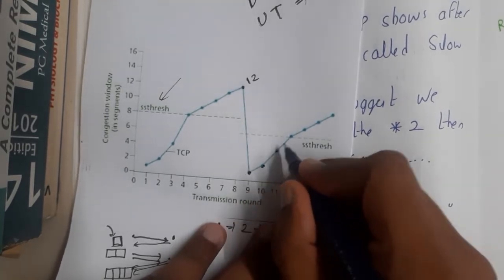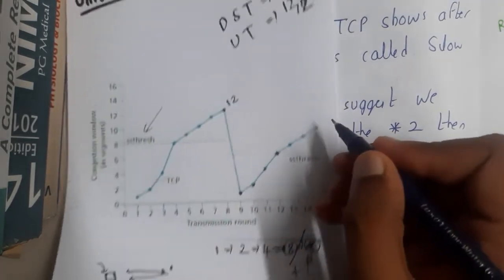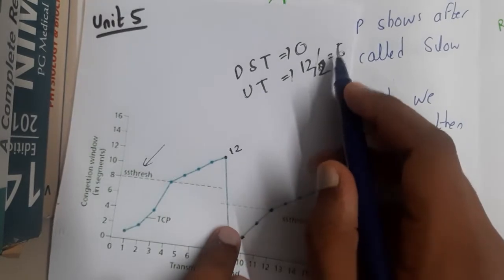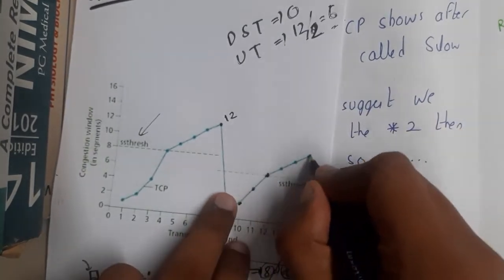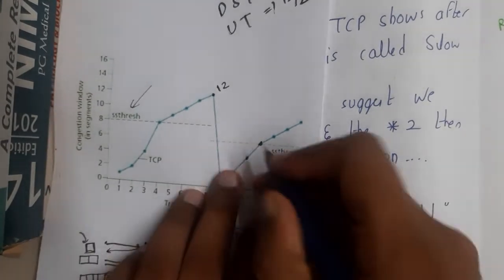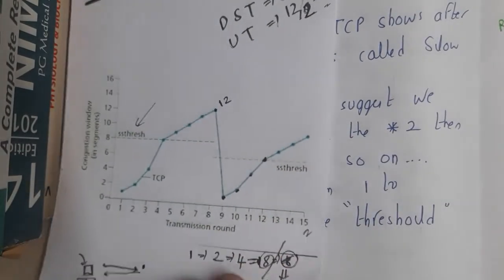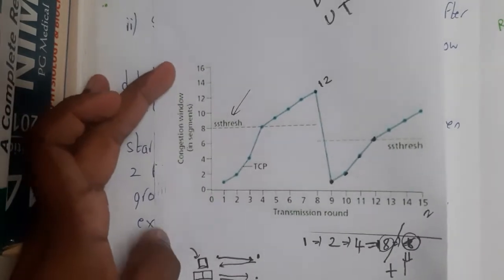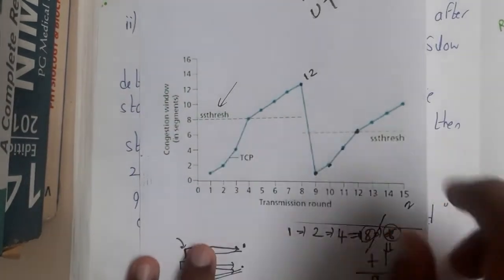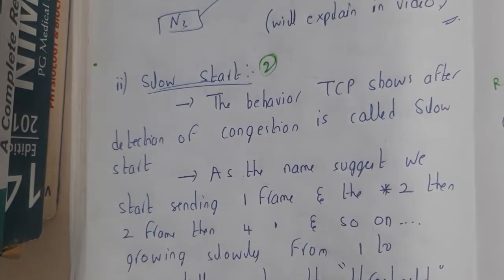The same process continues again from zero: double to 1, 2, 4, 8. Once it reaches 8 it already crosses the new threshold of 6, so it will increment by one again from there. So the word 'slow start' means starting slowly — that is the core concept. Now let us go to the theory, which will be a piece of cake.